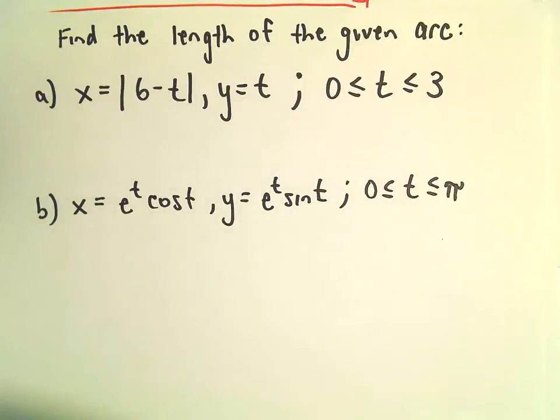So in part A we've got the absolute value of 6 minus t equals x, and then y equals t. We're going to evaluate this from 0 to 3.